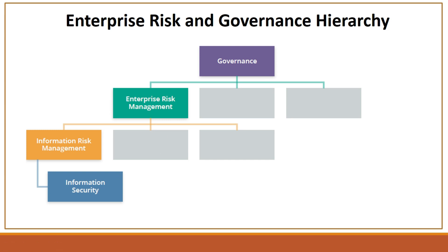Information risk management covers managing the risk related to information, including information technology. This has all sorts of risks from financial to physical, and information is only one of the multiple assets an organization needs to manage. The last area is information security — the tools and practices to manage risk related to information: how to protect it, and what kinds of risks could arise if information is leaked out.